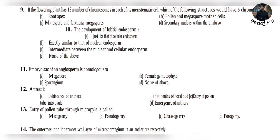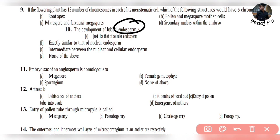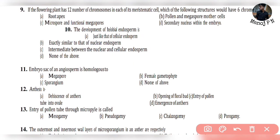Question 10: The development of Helobial endosperm — this is intermediate between nuclear endosperm and cellular endosperm. So the answer is option D.